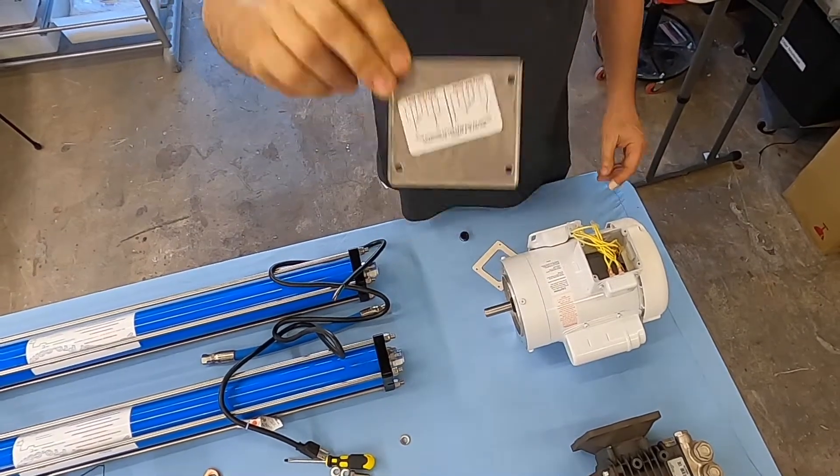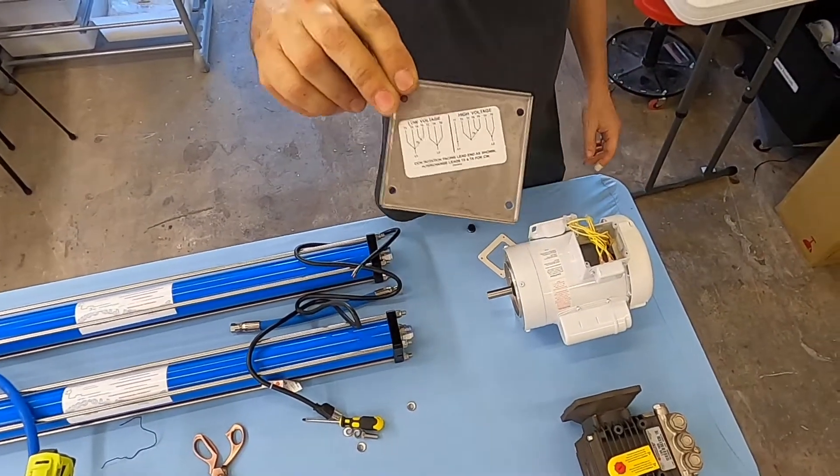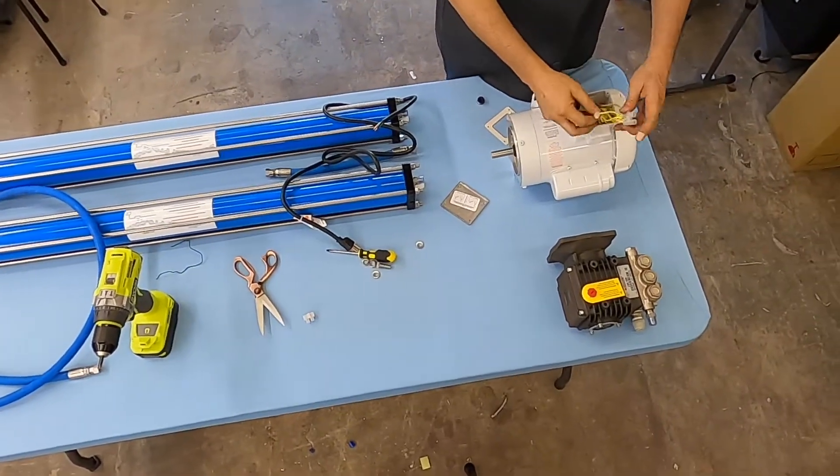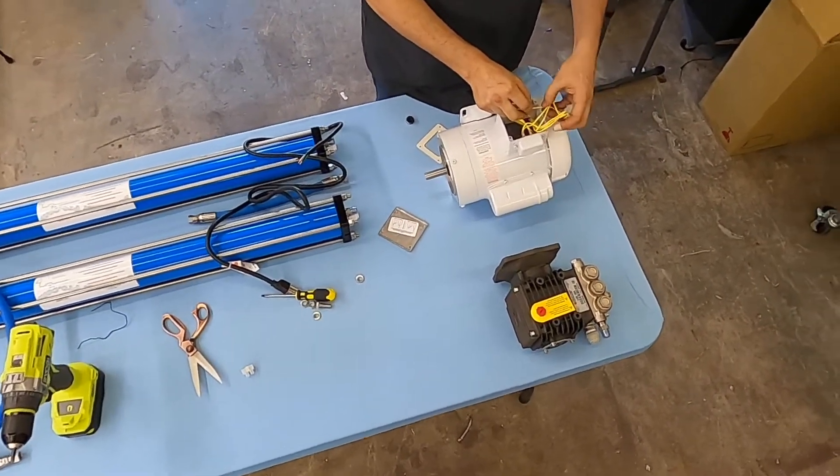So the numbers that you see on the sticker are actually printed on the wires. Although they're all yellow, if you pay close attention, you will see numbers.